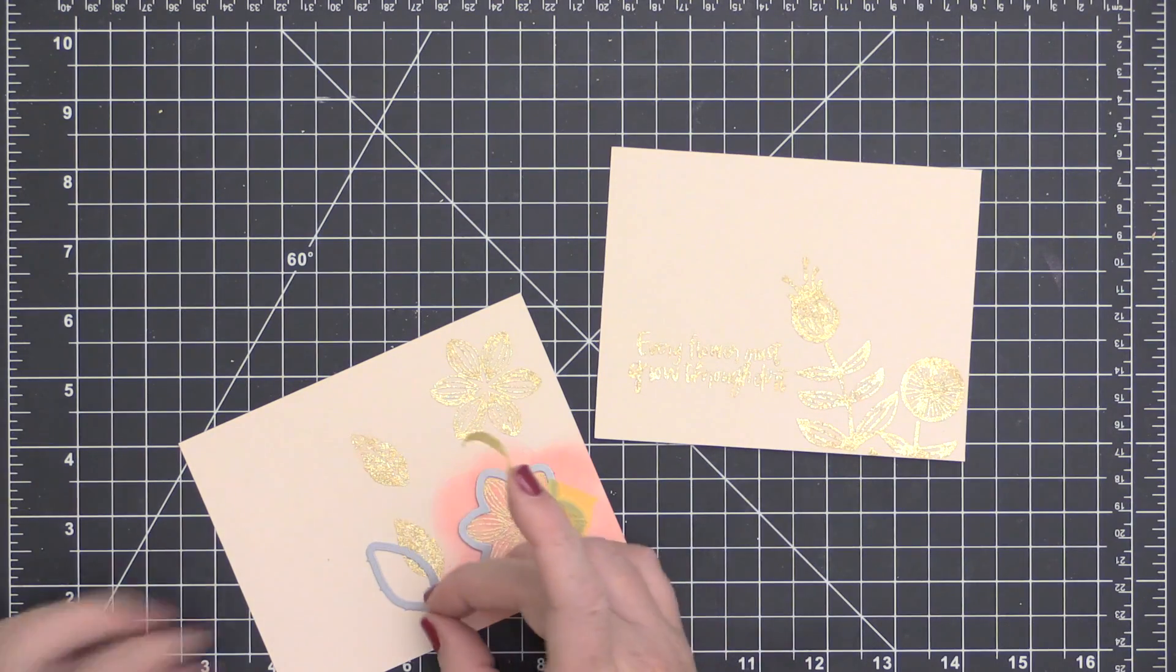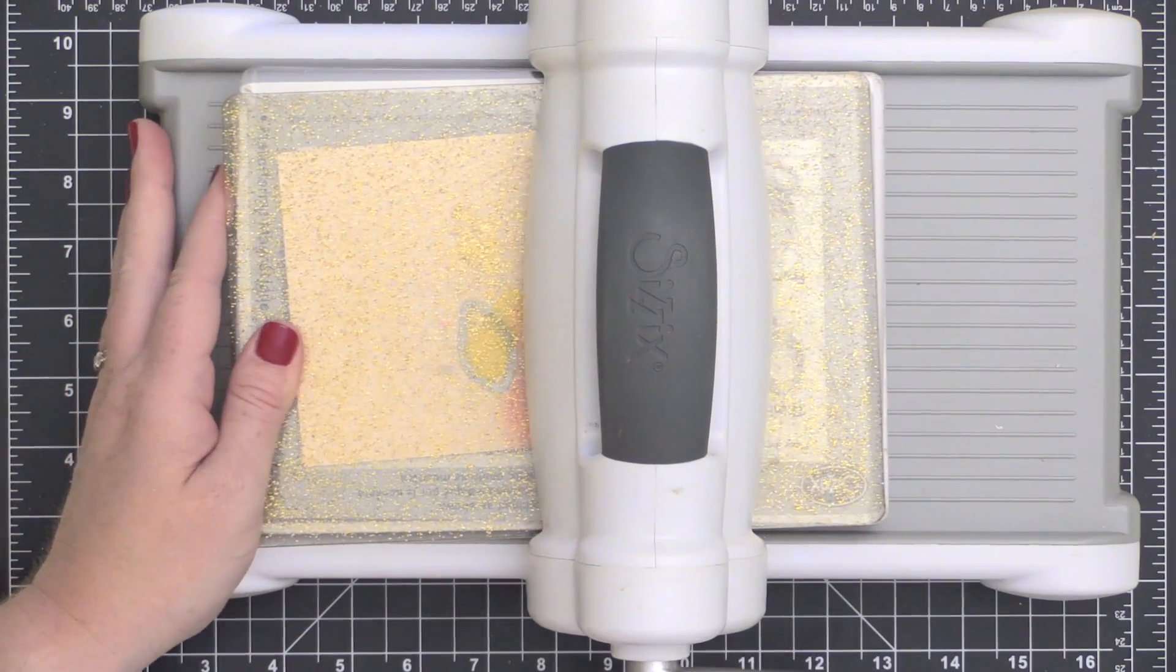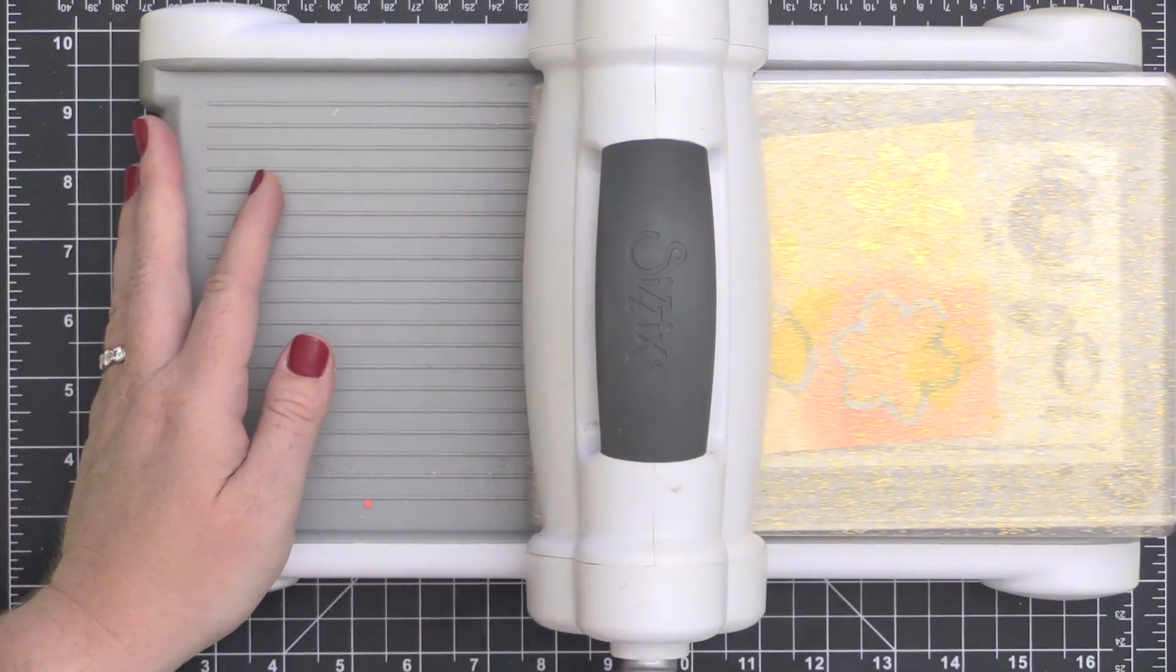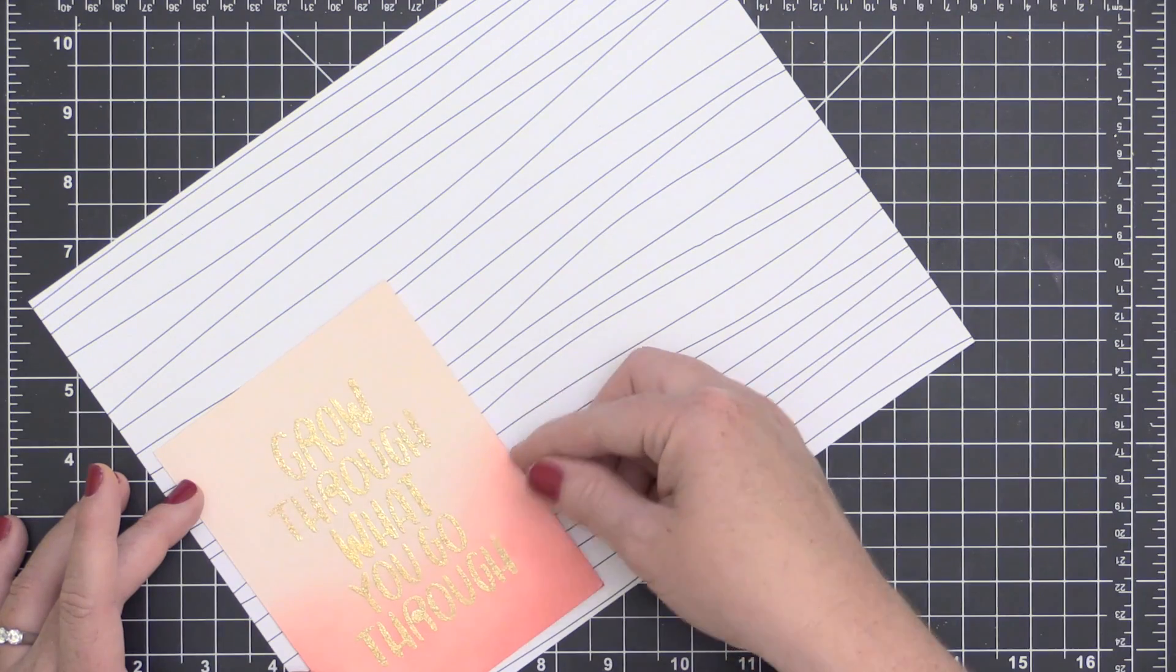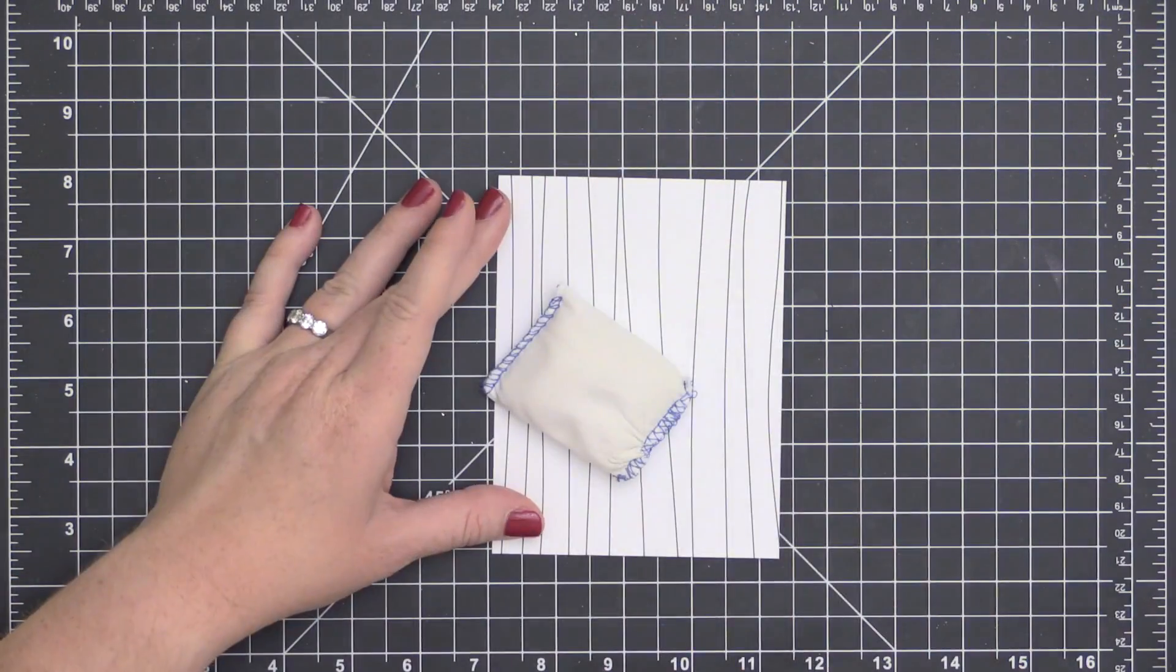On this other piece, I also blended some of that Distress Oxide ink over that flower to give it a little bit of color, and then I'll use the coordinating dies to run those through my die cut machine. These images here, these floral images, are from the new Essentials by Ellen release. It is the Rustic Botanical set and I love it.